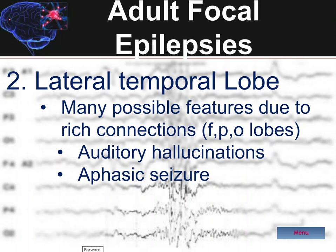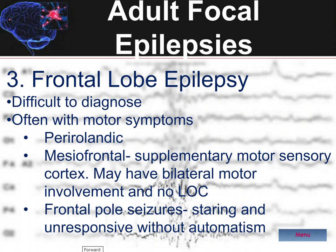Frontal lobe epilepsies may have multiple different types of motor involvement with many different manifestations depending on the portion of the frontal lobe. For example, the perirolandic cortex will produce either simple clonic or tonic-clonic seizures with activation of the motor homunculus, whereas a mesiofrontal lobe epilepsy can involve the supplementary sensory motor cortex and produce bilateral motor and sensory signs.